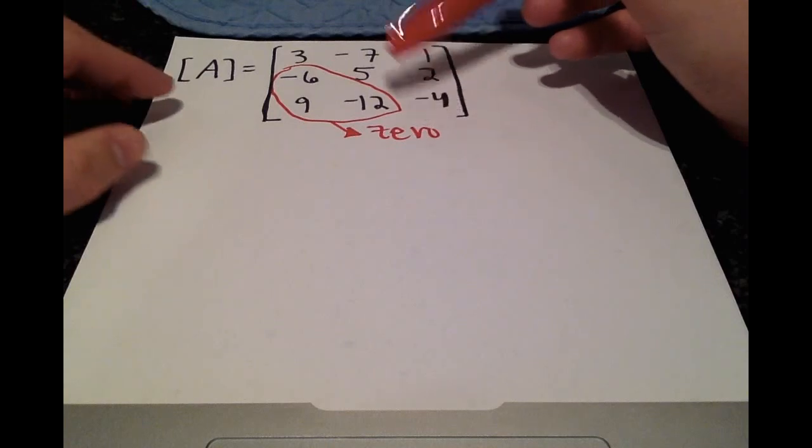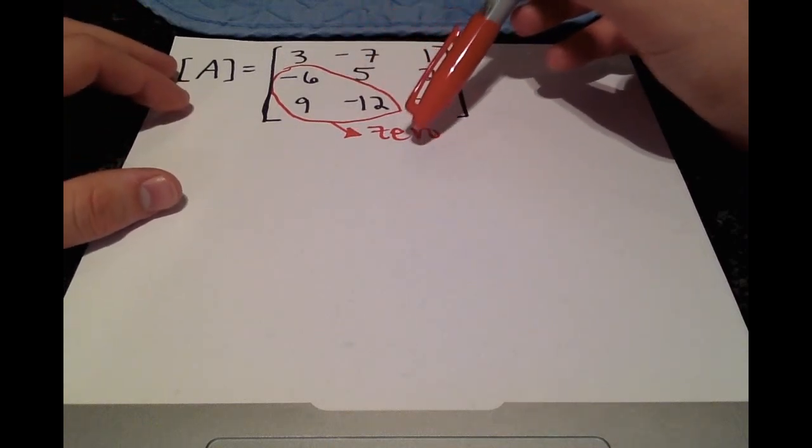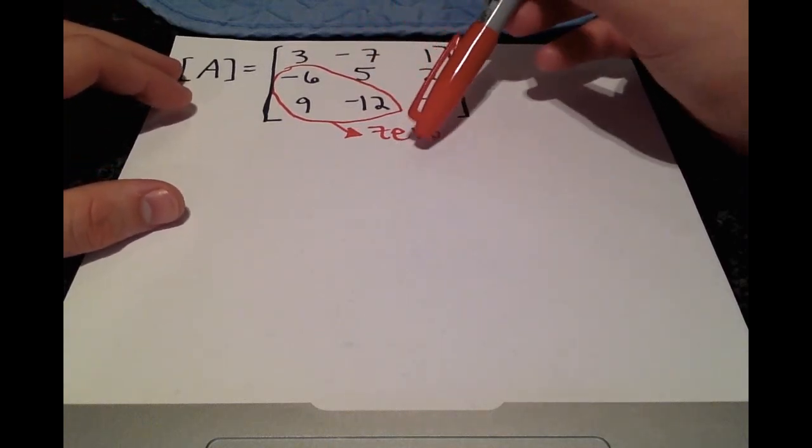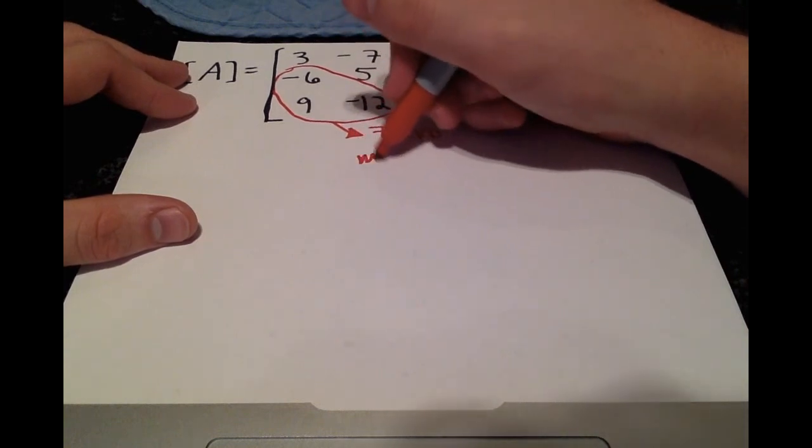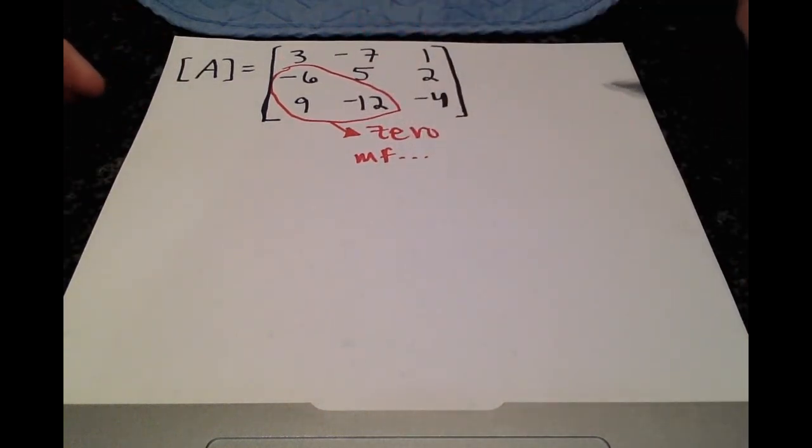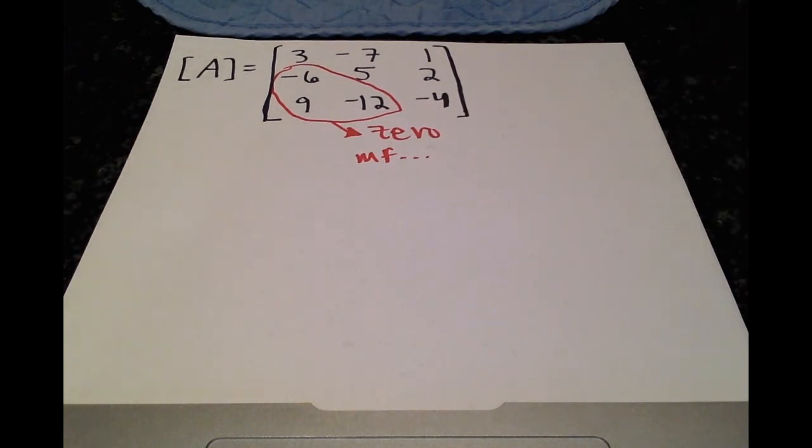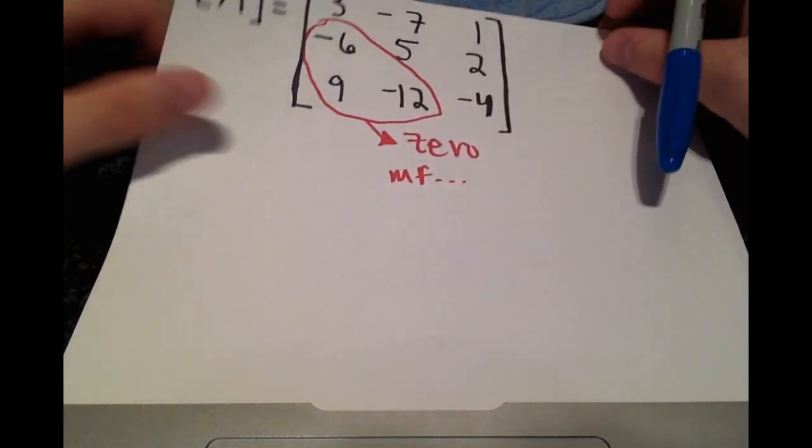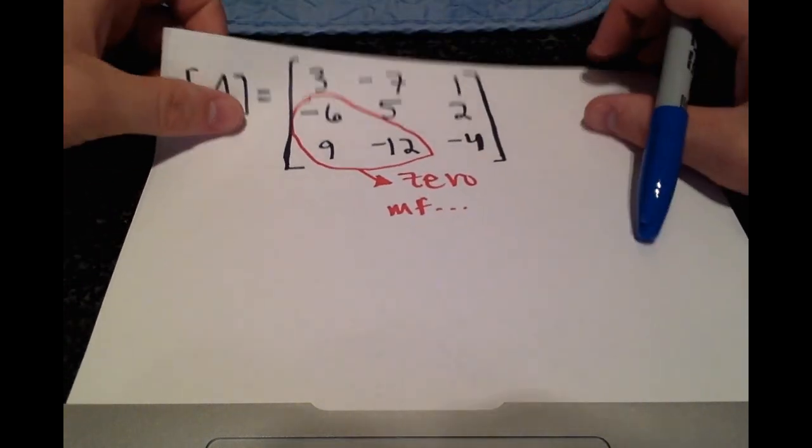And keep in mind, as we do the row operations, we have to keep track of what we're multiplying each row by because that'll give us our multiplication factors, which will come in handy when getting our lower matrix. And what I like to do is write the steps on the side so we can keep track of all of our terms.